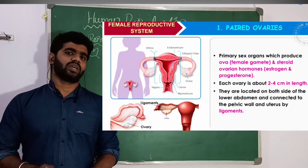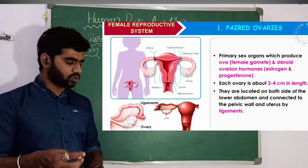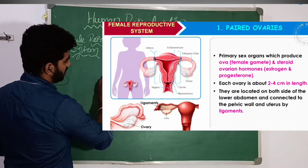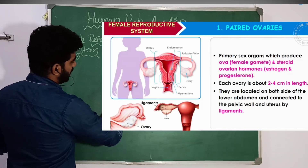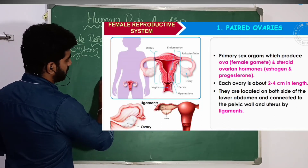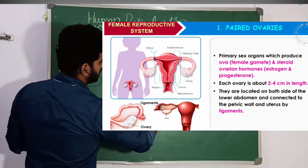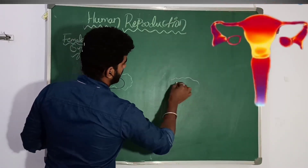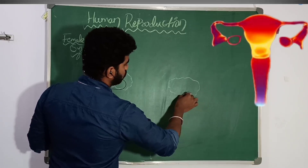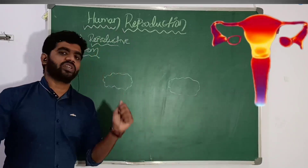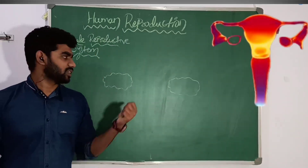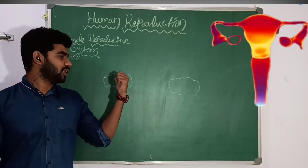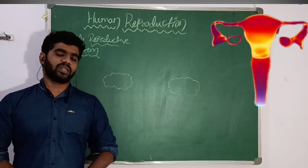Each ovary measures about 2 to 4 cm. These are present in the abdominal cavity and pelvic region. Unlike the testes, which are housed in the scrotum for temperature regulation during spermatogenesis, the ovaries remain within the pelvic region. The ovaries are attached by ligaments called mesovarium.